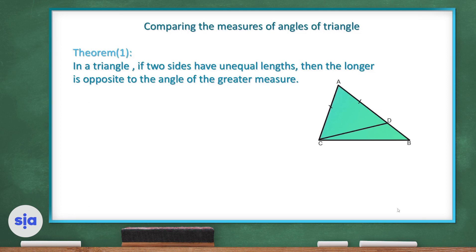Hello dear students, welcome to a new episode. In this episode we'll be talking about comparing the measures of angles of a triangle. Theorem number one says: in a triangle, if two sides have unequal lengths, then the longer side is opposite to the angle of the greater measure. As you can see here in triangle ABC, in which AB is greater than AC...